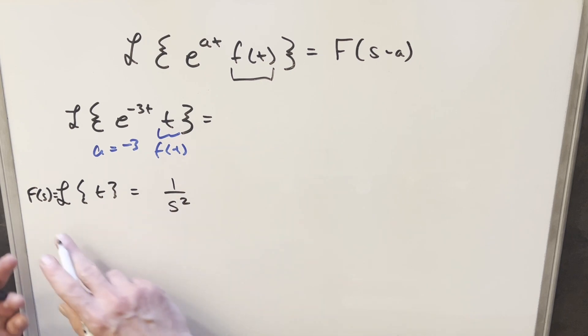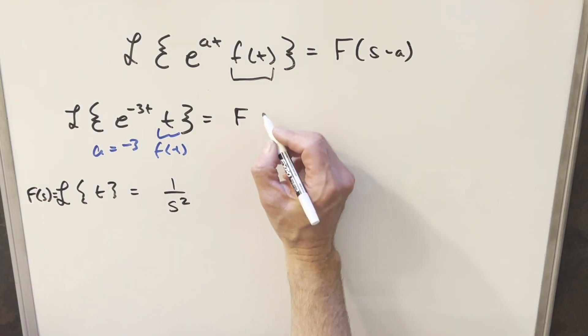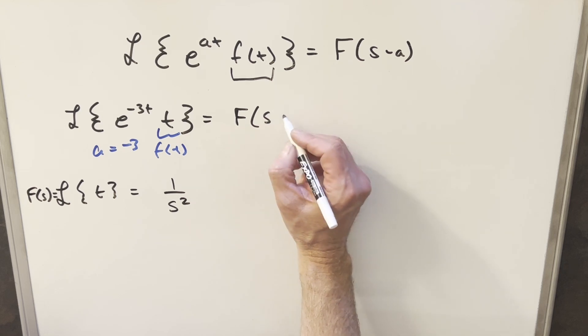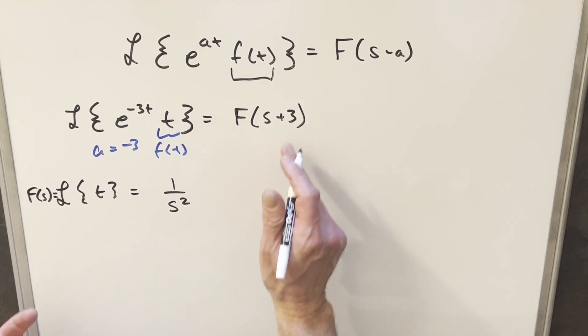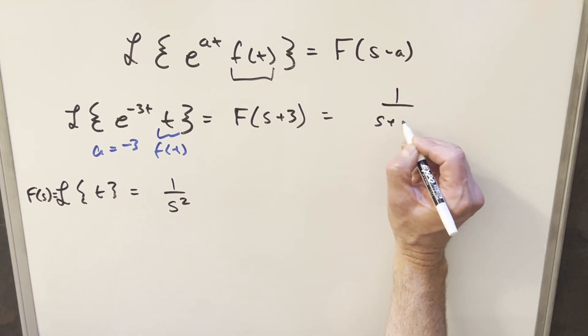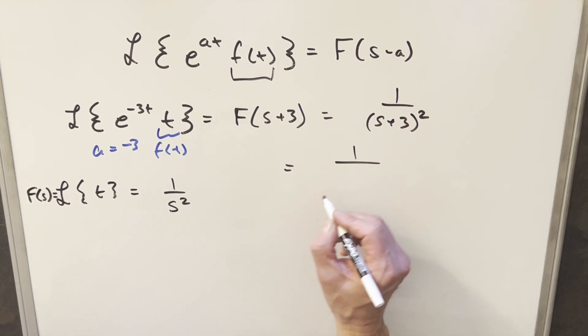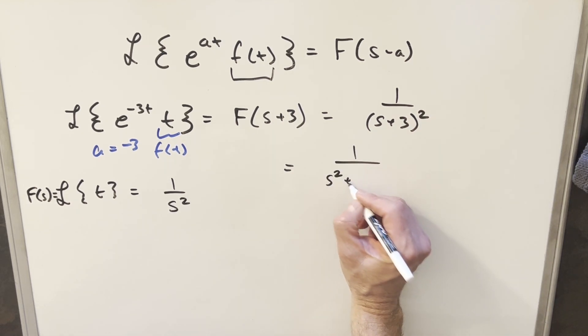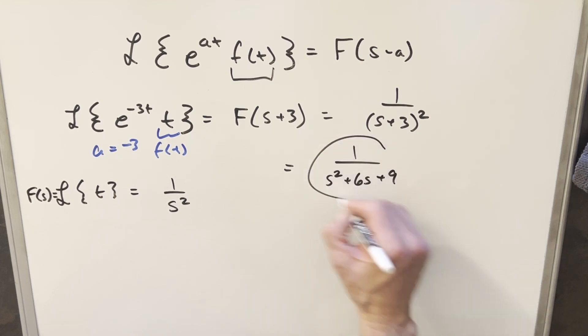Come back to our problem, we know what our f of s is, we just need to calculate our f of s minus a. So this thing is going to be f of s minus minus 3 gives me plus 3. So we just need to plug s plus 3 in here. So this is going to give me 1 over s plus 3 squared. I'll just multiply this out, we're going to end up with 1. This will give me s squared plus 6s plus 9. And that's that one.